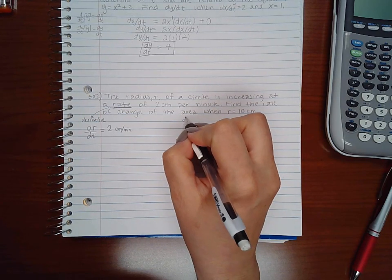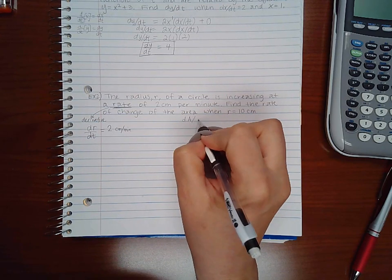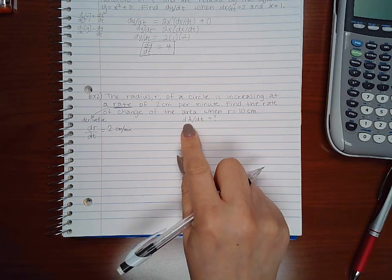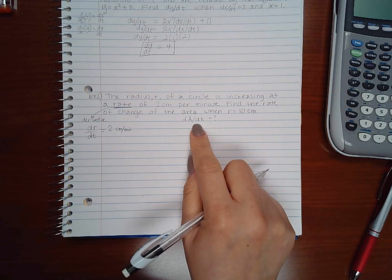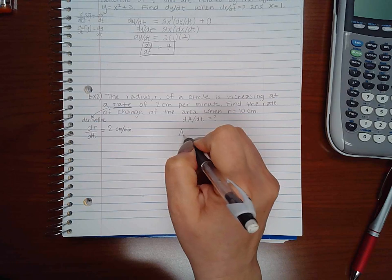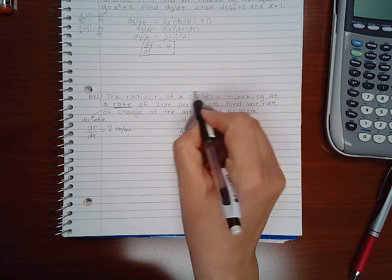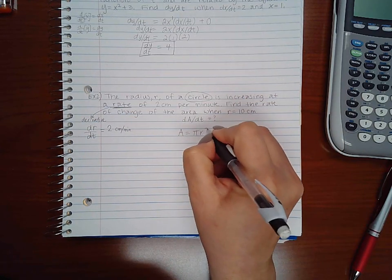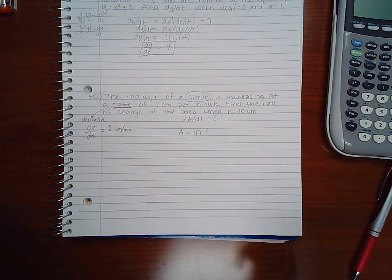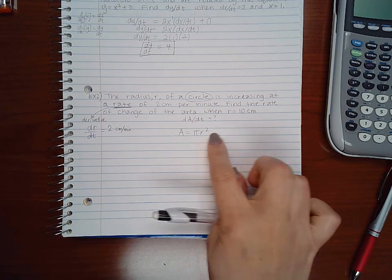So they want me to find the rate of area, so da/dt. That's what they want me to find. Well in order for me to find da/dt, I need to have the function a. So I do know that area for a circle is pi r squared, and if I want to know the rate of the area, then I need to take the derivative of this equation.